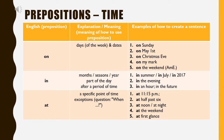Next slide: prepositions of time. The word 'on' is usually used for days and dates — for example: on Sunday, on May first, on Christmas Eve, on the weekend. The word 'in' is usually used for months, seasons, years, and parts of the day, or after a period of time — for example: in summer, in July, in 2017.